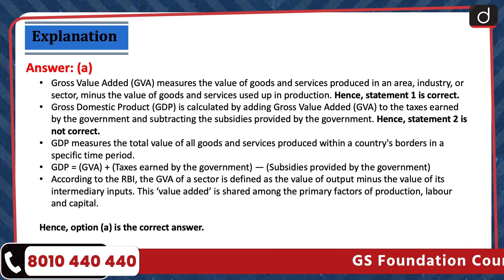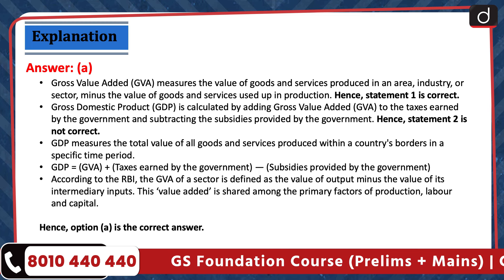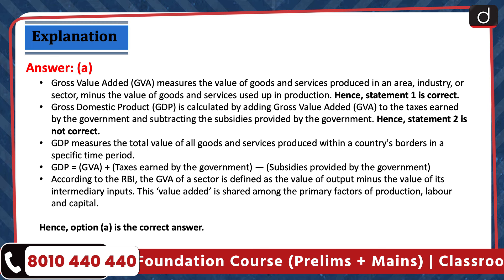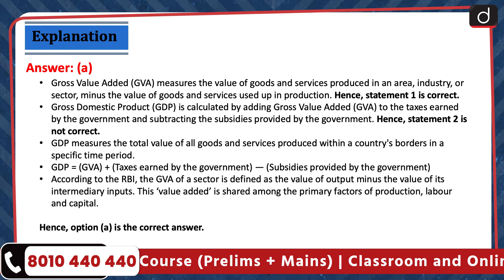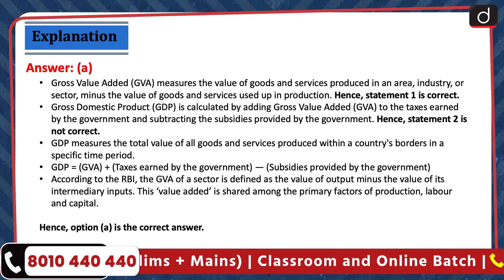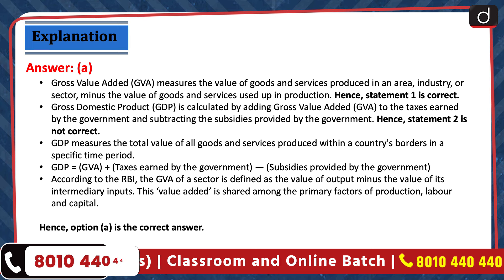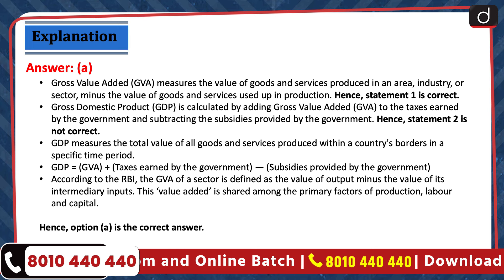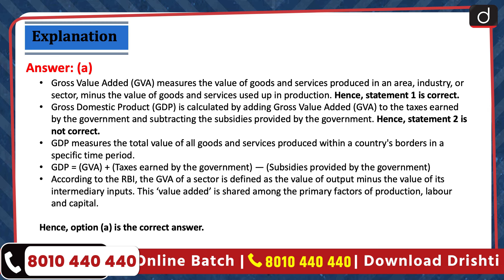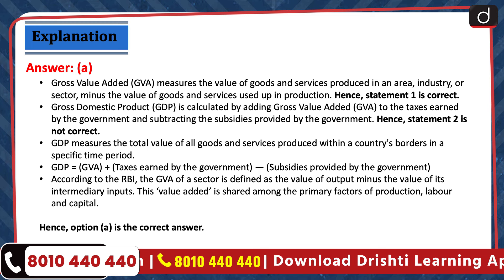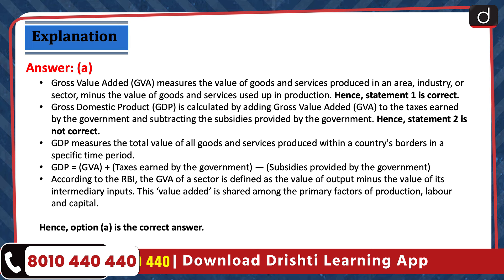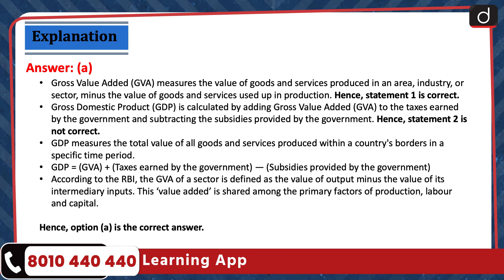Gross domestic product is calculated by adding gross value added to the taxes earned by the government and subtracting the subsidies provided by the government. Hence, statement 2 is not correct. GDP measures the total value of all goods and services produced within a country's borders in a specific time period. GDP equals GVA plus taxes earned by the government minus subsidies. According to the RBI, the GVA of a sector is defined as the value of output minus the value of its intermediary inputs, shared among primary factors of production — labor and capital. Hence, option A is the correct answer.